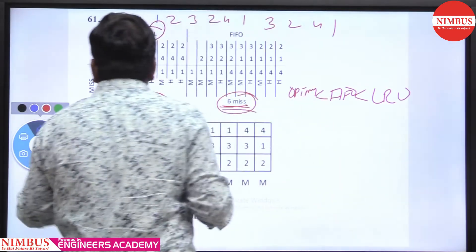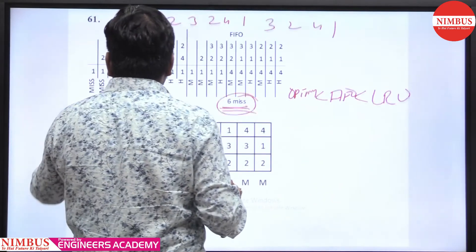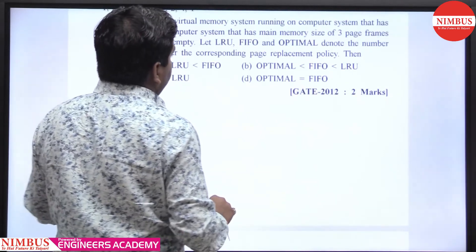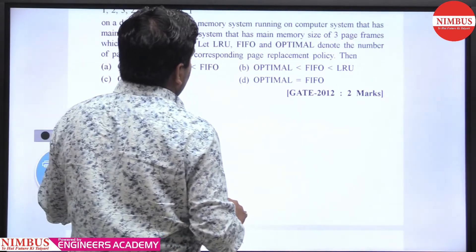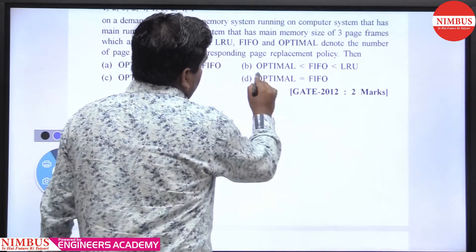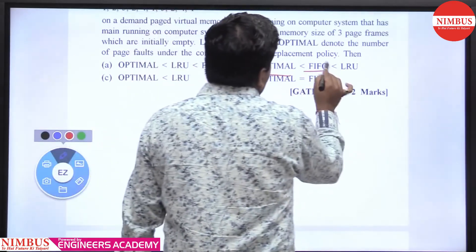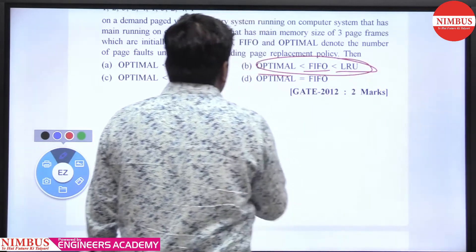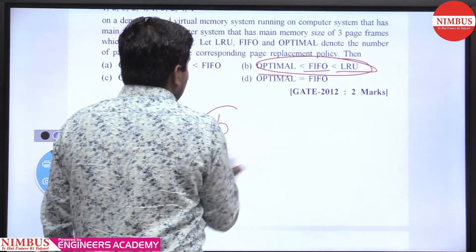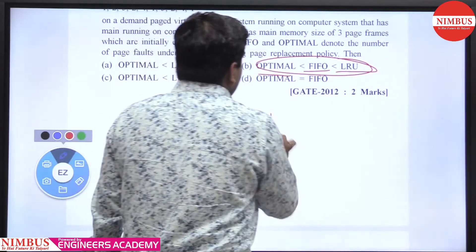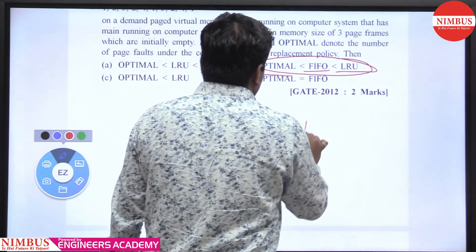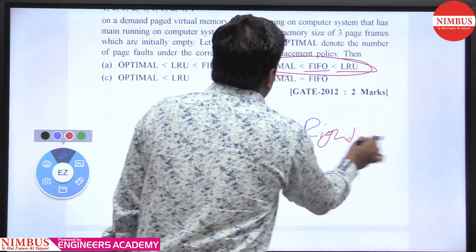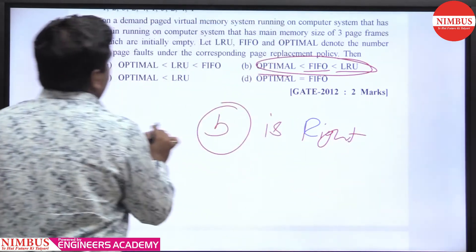So here you can see Optimal has the least page faults, then FIFO, then LRU which has the highest. Therefore, option B — LRU is the highest — is the right answer. You take the frame size of 3 and apply the reference string.